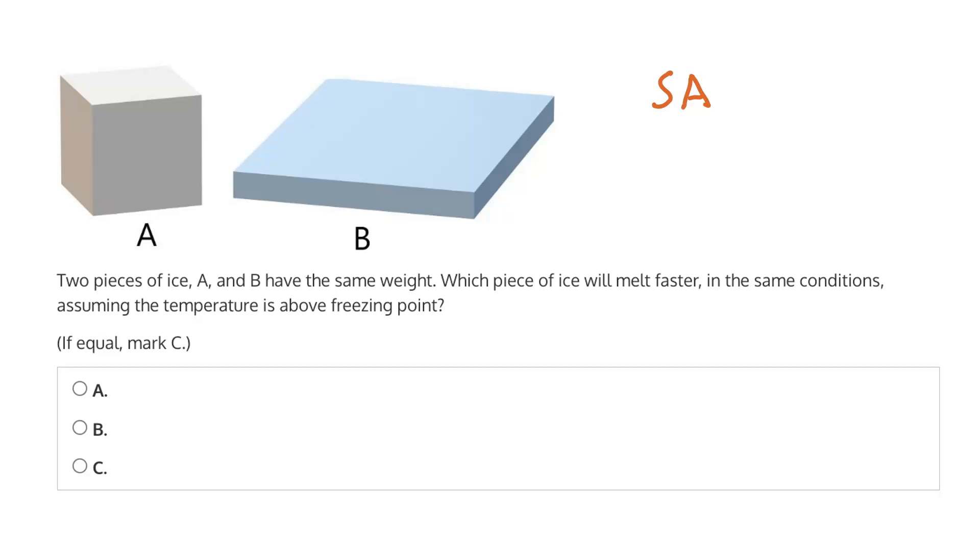So we have to ask ourselves, which has the larger surface area? Well, this rectangular prism is going to have a much larger surface area than that of a cube. So the surface area of B is much larger than the surface area of A.